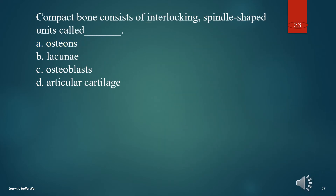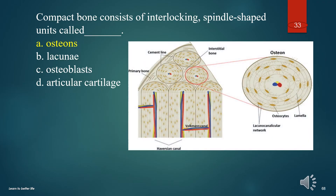Compact bone consists of interlocking, spindle-shaped units called what? A. Osteons. B. Lacunae. C. Osteoblasts. D. Articular cartilage. The answer is A. Osteons.